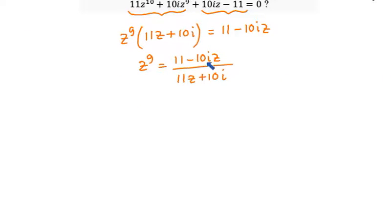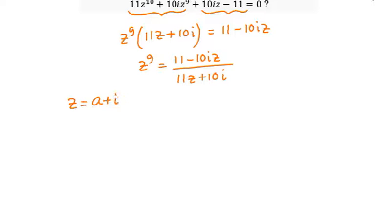You can see that in the numerator and denominator the coefficients 11 and 10 are repeated, with only the position of z changed — something very interesting. Let's try to analyze this further. Let z equal to a plus iota b, representing z as a complex number.